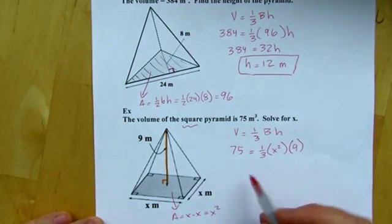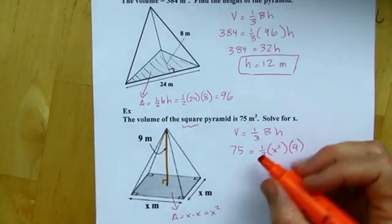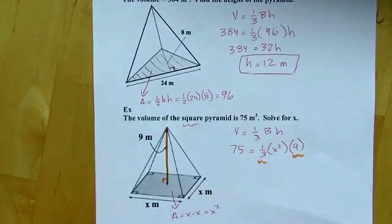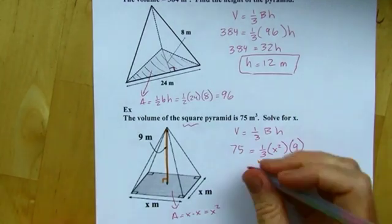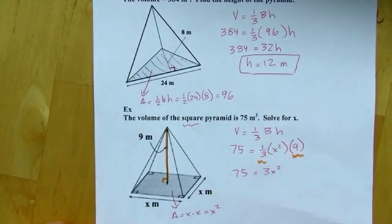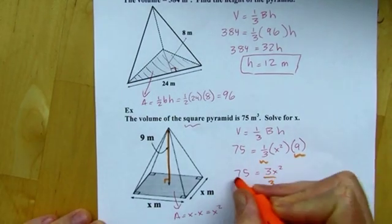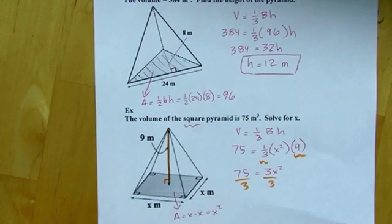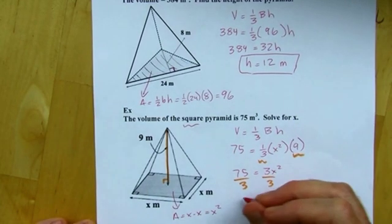So, let's start cleaning this up a little bit. So, I'm looking at this and thinking, oh, one-third of 9 is 3. And I'm trying to get x by itself. So, first, I'm going to divide by 3. So, 25 equals x squared.